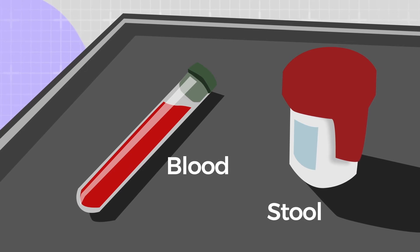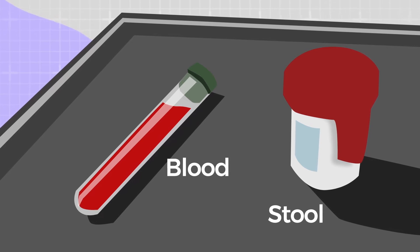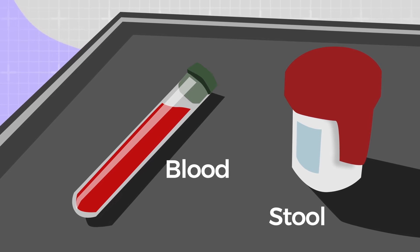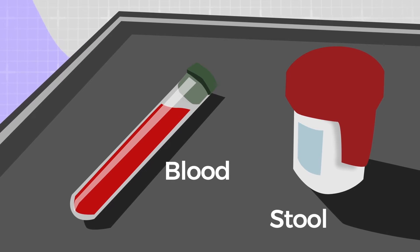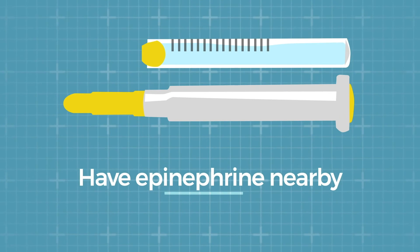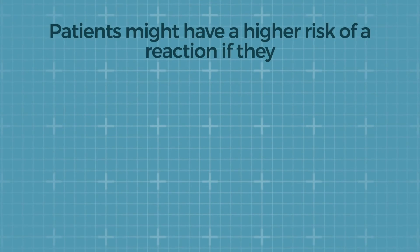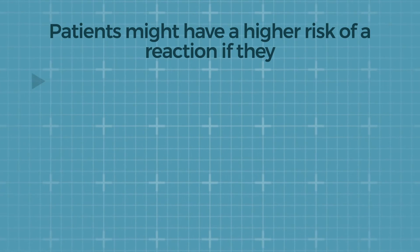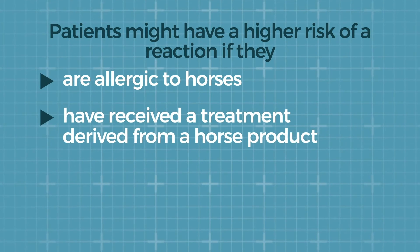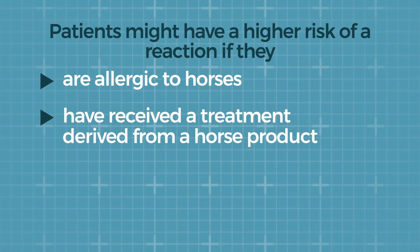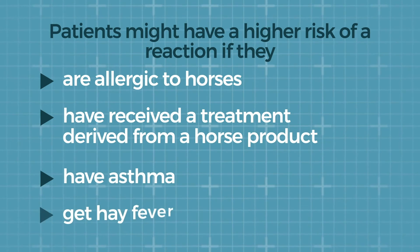Take blood, stool and any other samples for botulism testing before antitoxin is administered to ensure accurate test results. Have epinephrine nearby in case of a hypersensitivity reaction. Patients might be at higher risk of a reaction if they are allergic to horses or ever received a treatment derived from a horse product, have asthma or get hay fever.